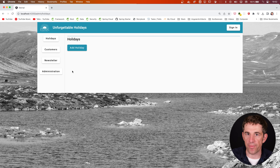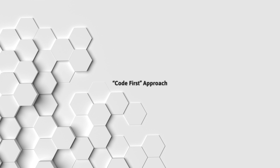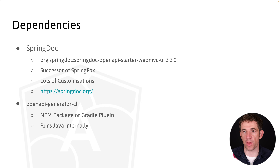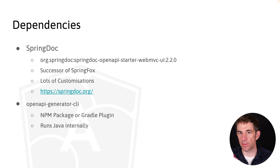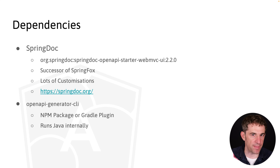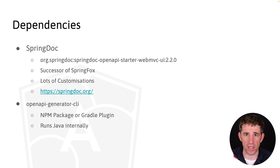We have our implementation, everything is already done. What do we have to do now? We need to install the dependencies for the OpenAPI integration into Spring. Currently we can use SpringDoc to do that. In the past there was also SpringFox available, but that one is deprecated and hasn't received any updates in the last three years. So just go with SpringDoc.